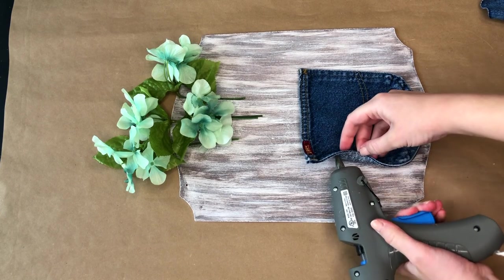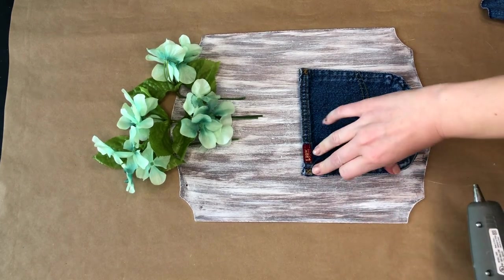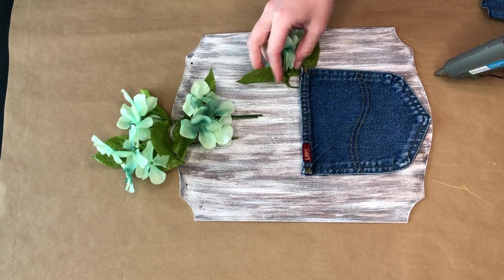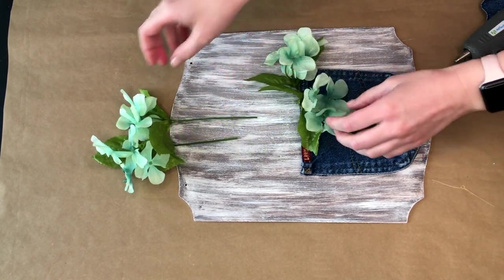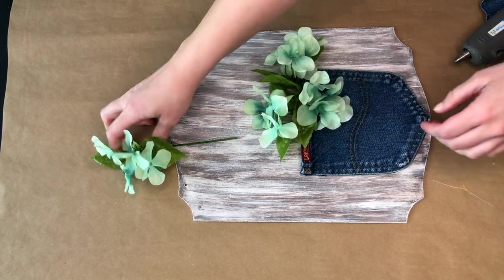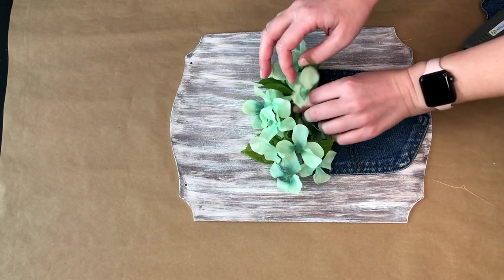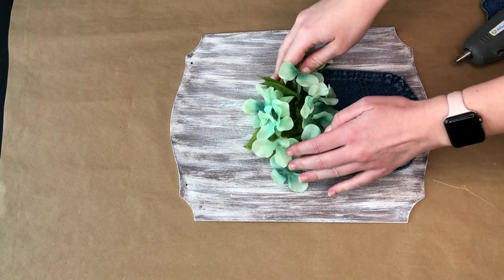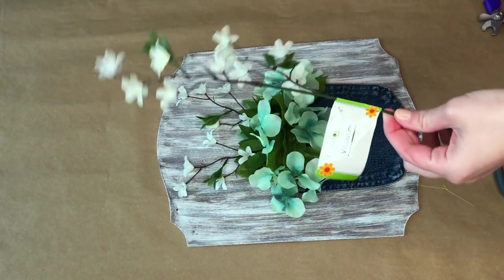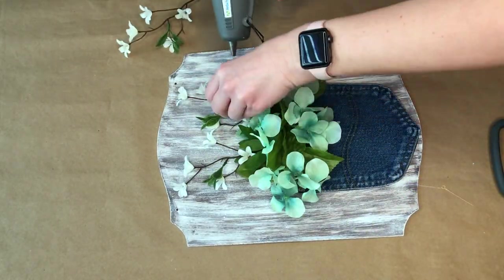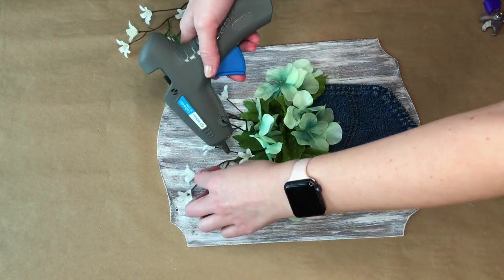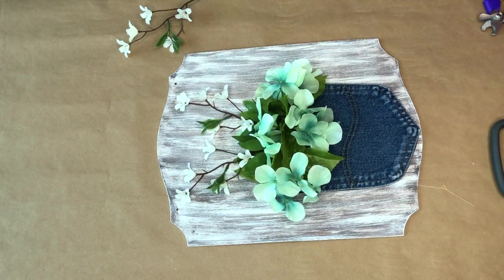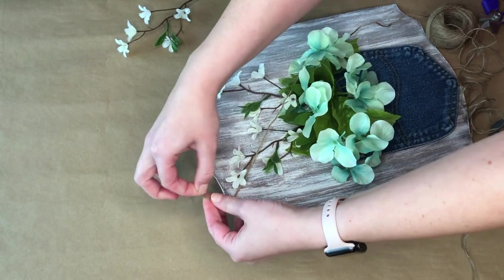I picked up these faux hydrangeas at the Dollar Tree and I'm just going to be tucking them down into the pocket. I kind of had the ones on the ends facing the sides and then I put two in the middle to kind of fluff up our jean pocket. Then I went in with some of these taller white flowers from the Dollar Tree and just stuck those in behind the faux hydrangeas. I did adhere those down with some hot glue, but the hydrangeas stayed in place so I didn't have to use any hot glue on them.